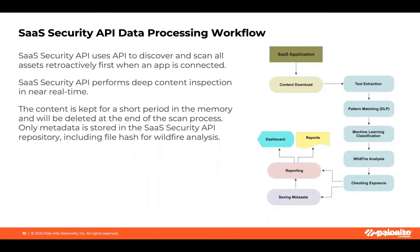SaaS Security uses an API to connect to your app and discover and scan the assets. It is a deep content inspection almost in real time. After the scan is done, it removes the data and only keeps metadata. The content of each asset is kept in memory only when SaaS Security scans the asset. We keep files up to 48 hours, user activities 90 days, and metadata indefinitely.